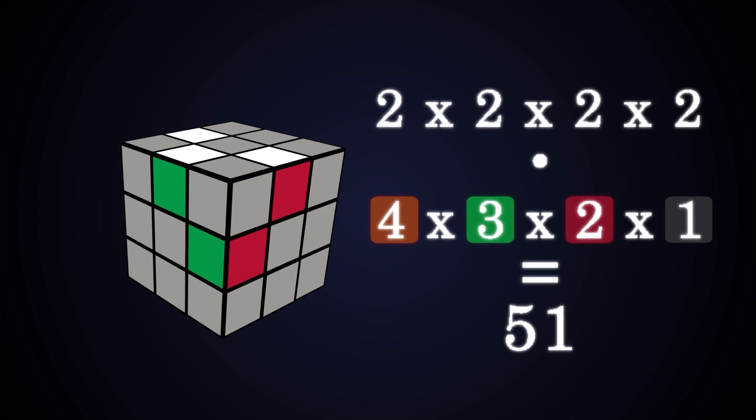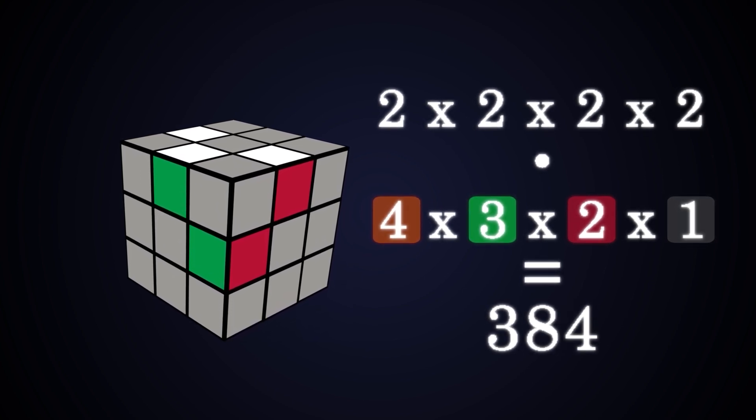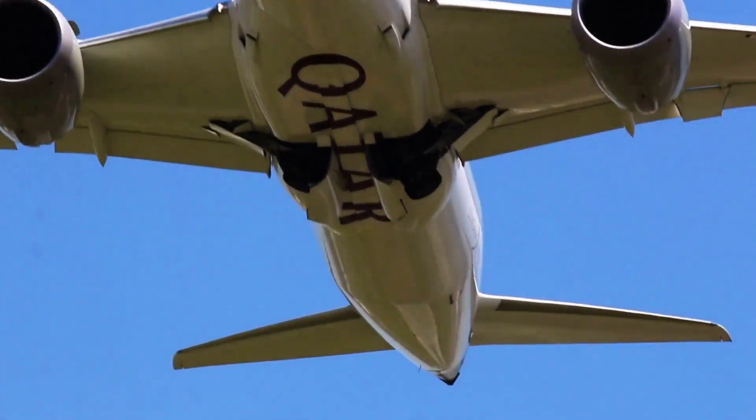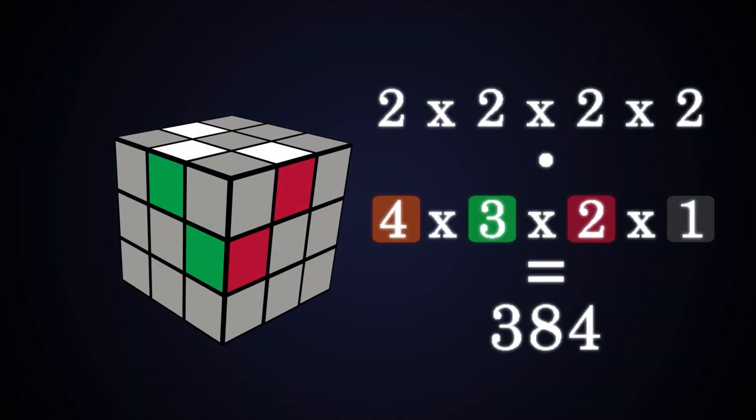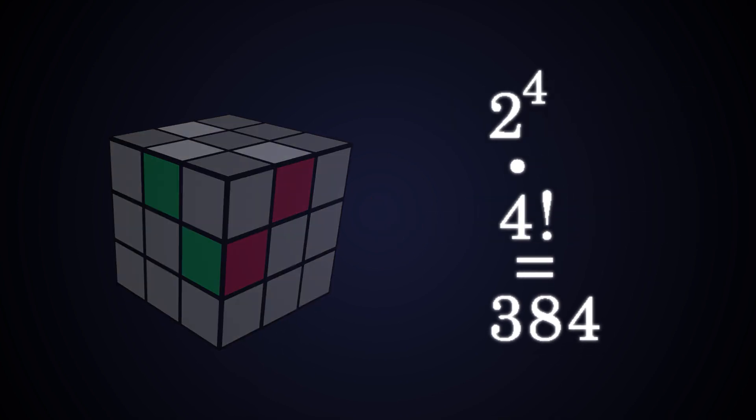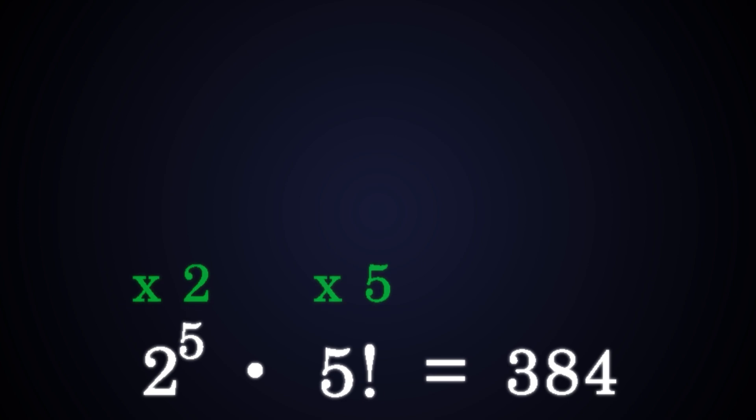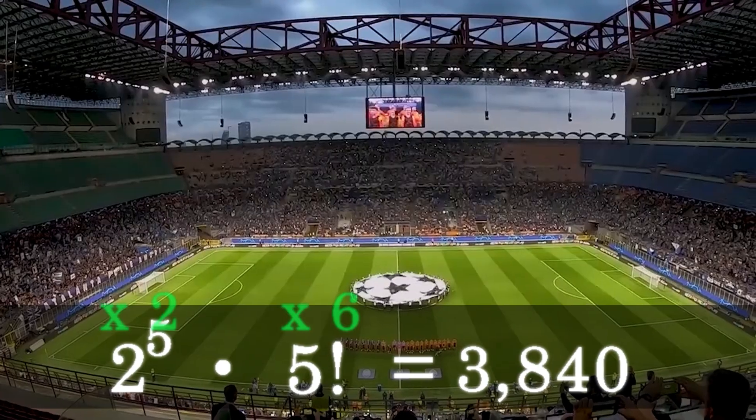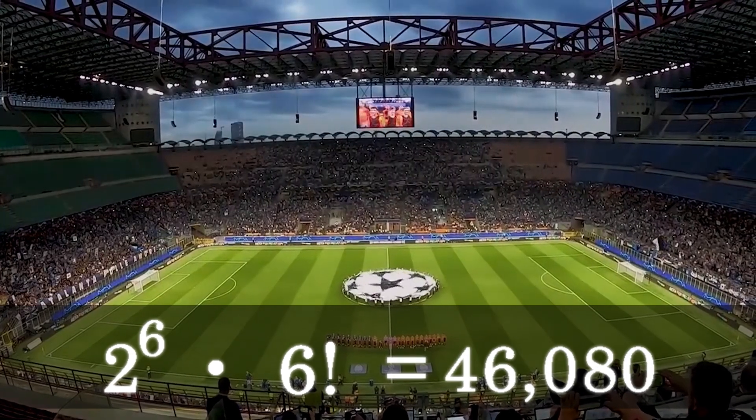We can choose to either flip or not flip these four edges, and there's now four ways to place the first edge back in, then three ways to place the next one, then two, then one. Now we're at 384 possible combinations—about the amount of people on a big plane. We can also simplify this by shortening this to 2^4 and this to 4 factorial.